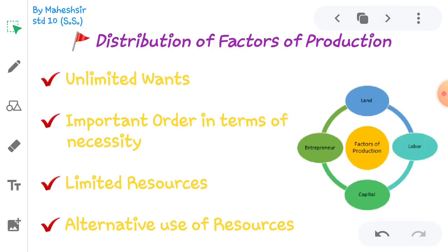Now we will see the Distribution of Factors of Production. Human wants are unlimited while resources to fulfill them are limited. Our wants and desires are unlimited but resources to fulfill them are limited. No nation of the world has resources in unlimited quantity. The resources are always limited.